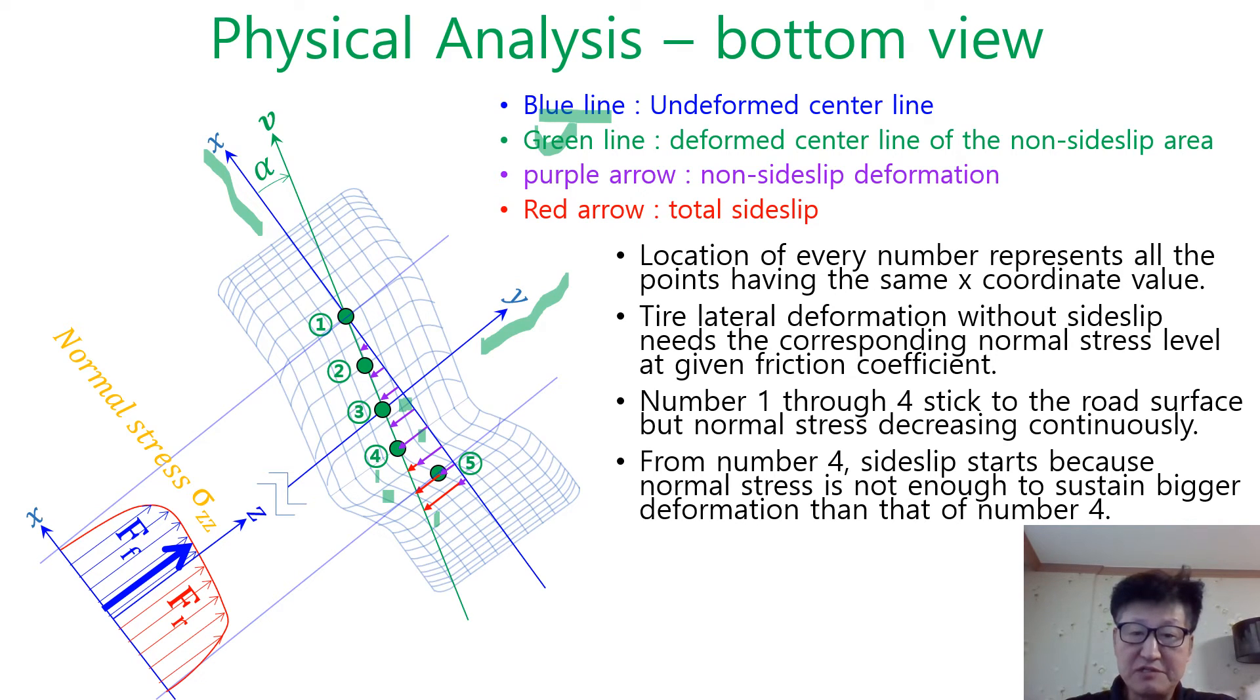This is the analysis of tire contact patch. The location of every number represents all the points having the same X coordinate value here. And tire lateral deformation without the side slip needs the corresponding normal stress level at the given friction coefficient. Number 1 through number 4 here stick to the road surface, but the normal stress decreasing continuously.